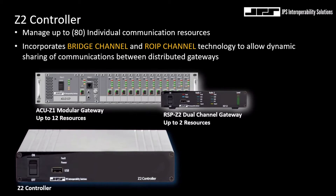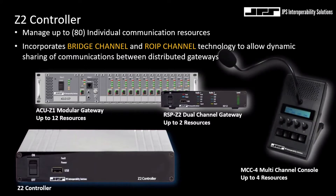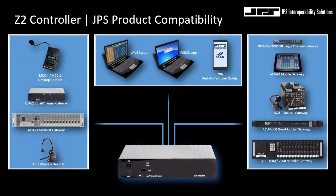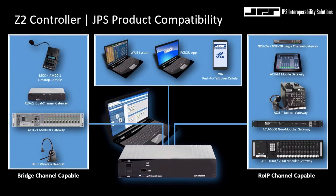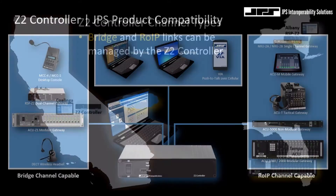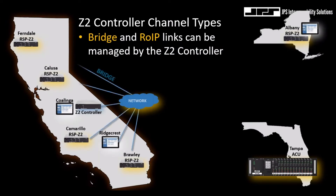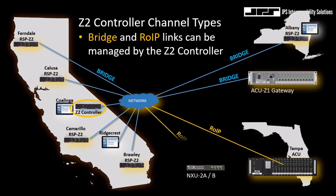The Z2 controller will work with the RSP Z2 dual-channel gateways and the ACU Z1 modular gateways, as well as the MCC multi-channel desktop console. Here's an overview of the Z2 controller compatibility with the entire catalog of products. On the left is our current line of Z-class products, which all implement bridging channels, and to the right are the products implementing ROIP channels. Because the Z2 controller is able to manage both bridge channels and ROIP channels simultaneously, this allows for a hybrid solution and a migration path between our ROIP-centric gateways and the newer Z product line.